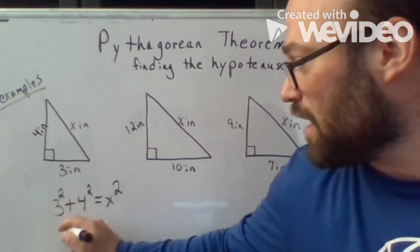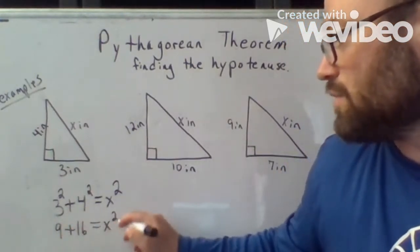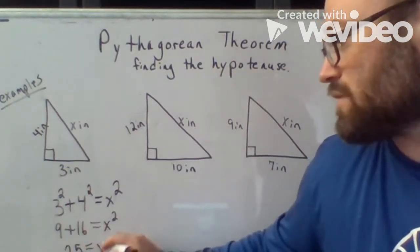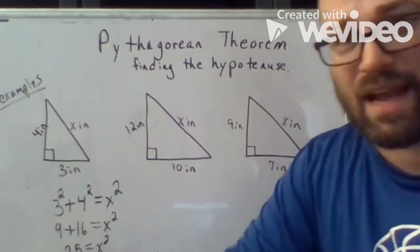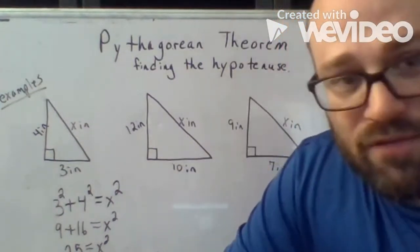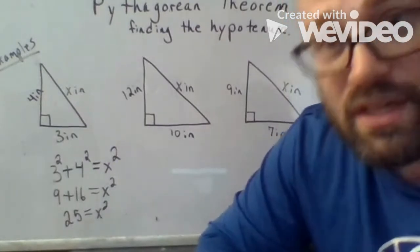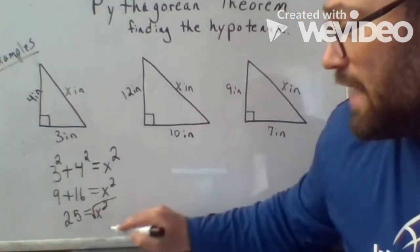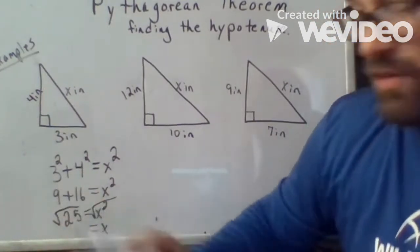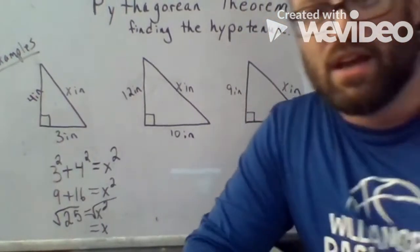So because A, B, and then C is the hypotenuse, it's our X. So X squared. So this is an equation and we have to solve for that equation. So three squared is nine. Four squared is 16. X squared. So now we can add these two together and that's 25 equals X squared. Now this is where you're going to come in handy with your calculator. You are going to solve for X.